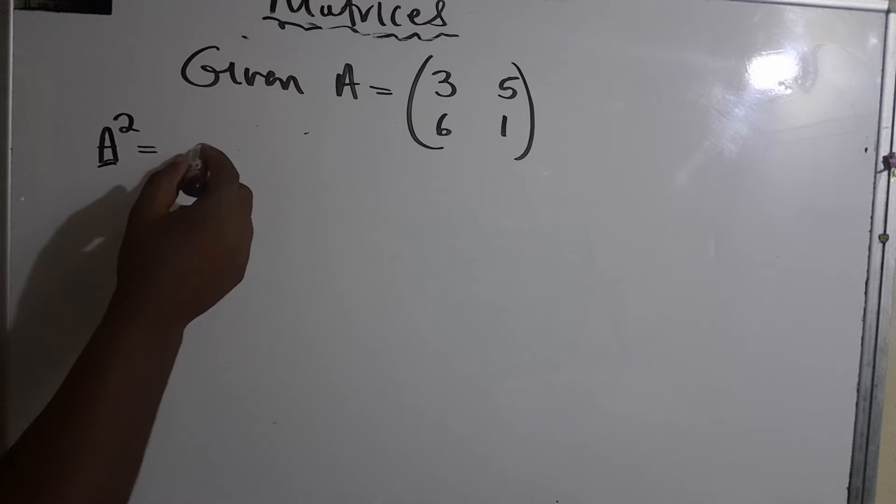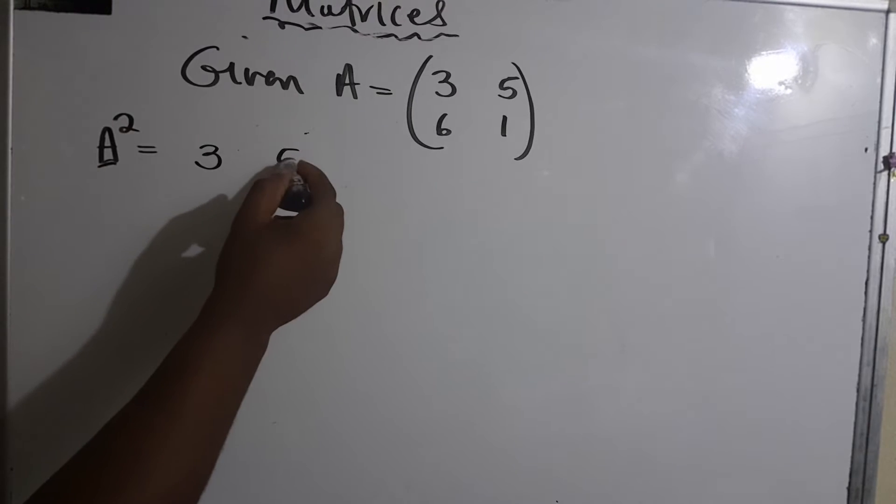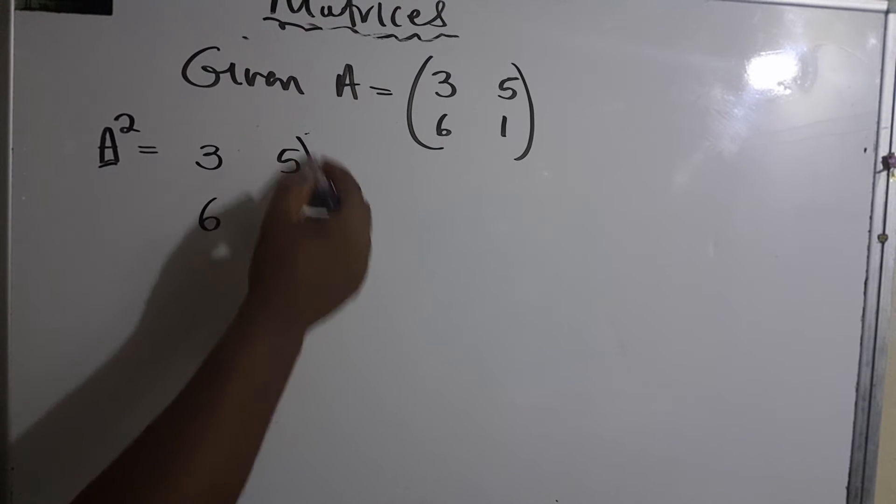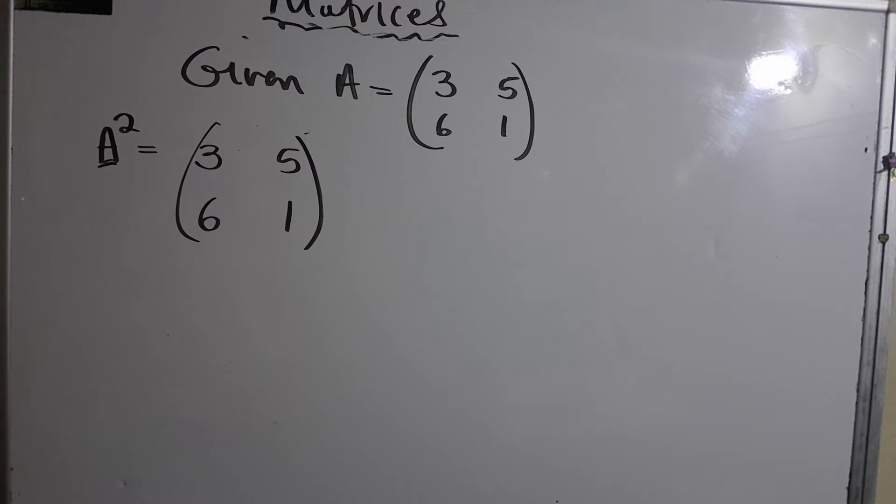Remember how we multiply a matrix. It will be (3 5; 6 1) and we times it by itself. How do we multiply a matrix? We simply multiply row by column.